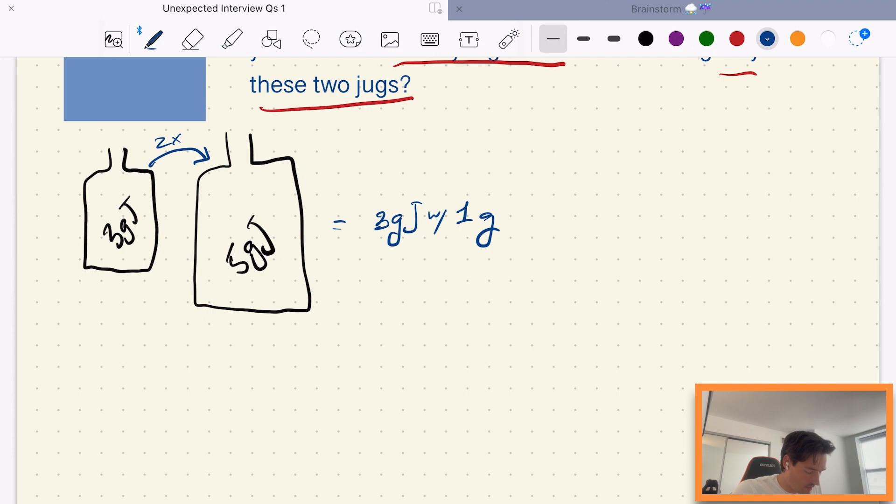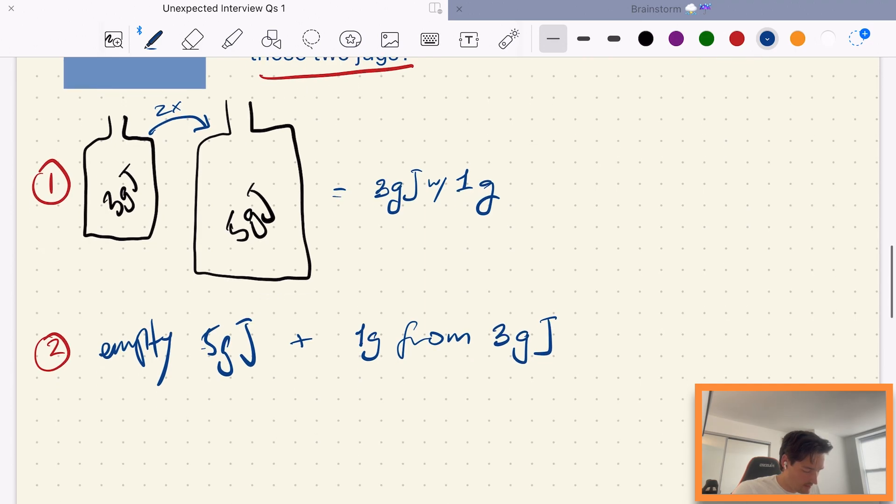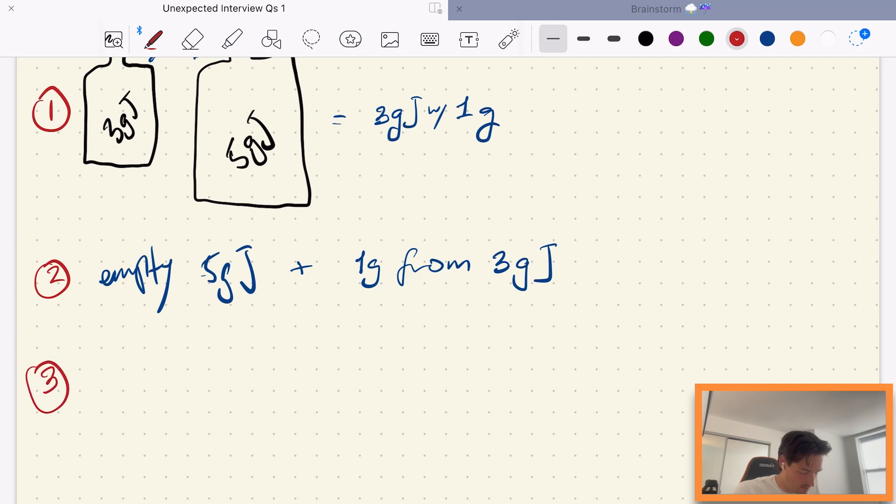So that was our step one: pour two of those into the 5 gallon jug. So now what we can do is step two, we can empty the 5 gallon jug, and then add the 1 gallon from the 3 gallon jug. Alright, looks good. And then we can for our final step, we can fill the 3 gallon jug and then add that to the 5 gallon jug with the already existing 1 gallon, and that will give us a total of 4 gallons.